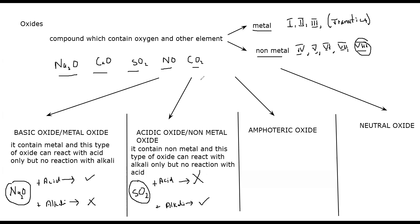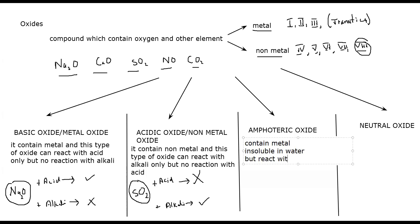Then there are some oxides which also contain a metal — amphoteric oxides. They contain a metal, but there is a difference: they are insoluble in water, but they can react with both acid and alkali. So this type of oxide which contains a metal, is insoluble in water, and can react with both acid and alkali — this is called an amphoteric oxide.